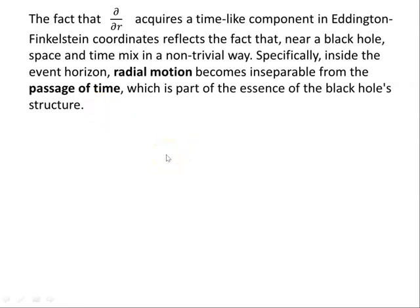The transformation and the resulting push forward are crucial for understanding how different observers — particularly those near a black hole — perceive space-time. Schwarzschild coordinates break down at the event horizon, but Eddington-Finkelstein coordinates remain regular there, as shown in the plot at the beginning. The fact that ∂/∂r requires a timelike component in Eddington-Finkelstein coordinates reflects that near a black hole, space and time mix in a non-trivial way. Inside the event horizon, radial motion becomes inseparable from the passage of time, which is part of the essence of the black hole's structure.